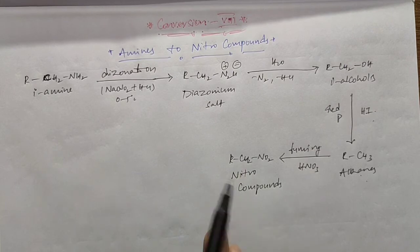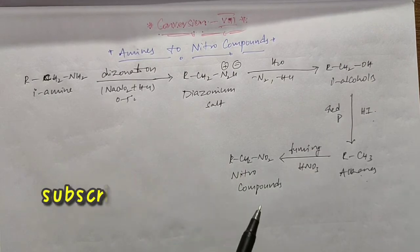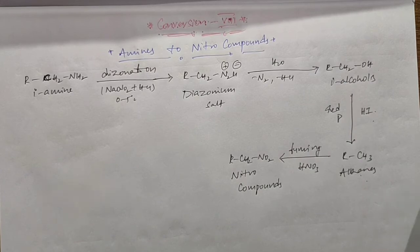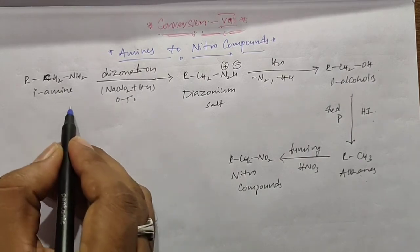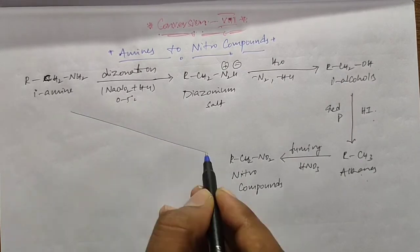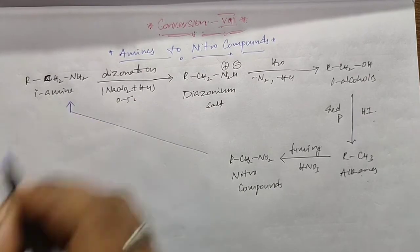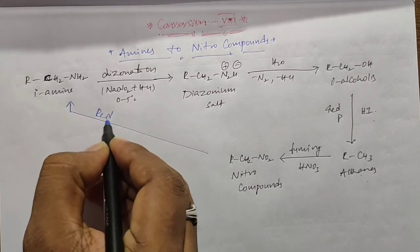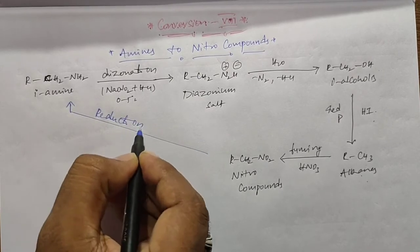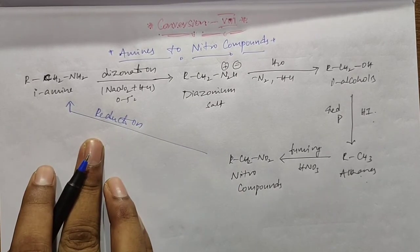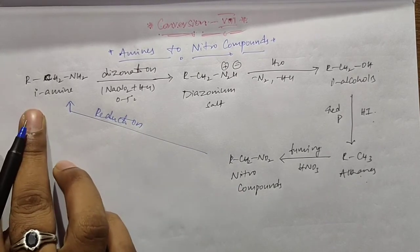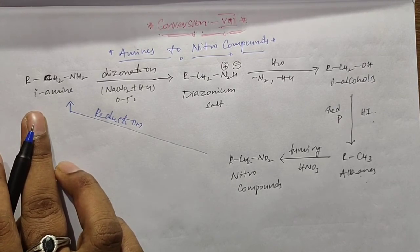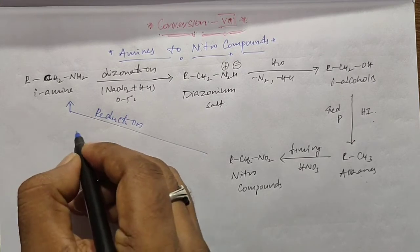We will also show how to convert nitro compounds back to primary amines. Nitro compounds can be directly converted into primary amines by reduction. When nitro compounds undergo reduction, they form primary amines.